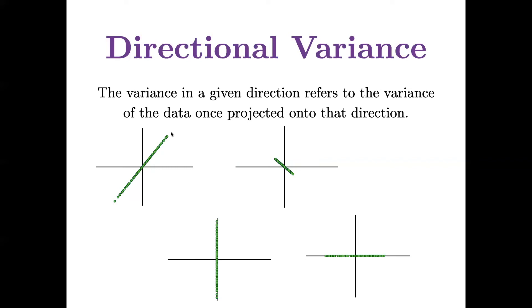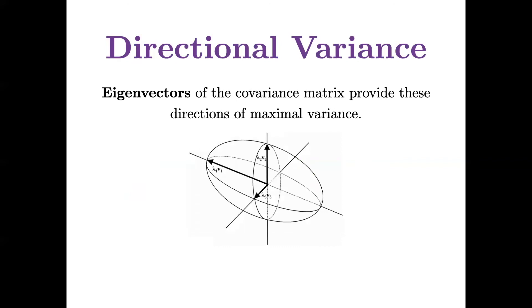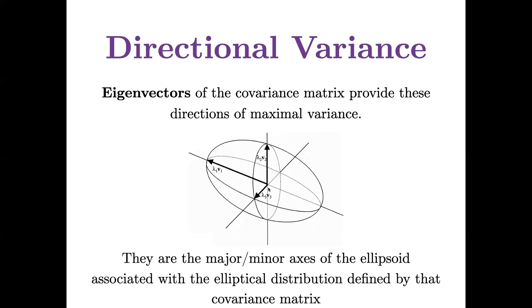Now it turns out that eigenvectors of the covariance matrix will provide these directions of maximal variance. You'll recall from our 90-minute primer that any elliptical distribution is defined by a mean and a covariance matrix. And that covariance matrix is what really determines the shape of that data cloud in space.